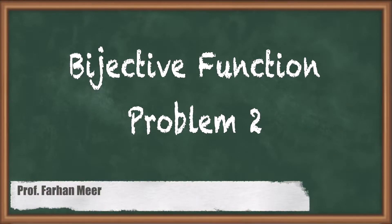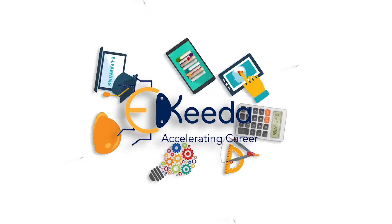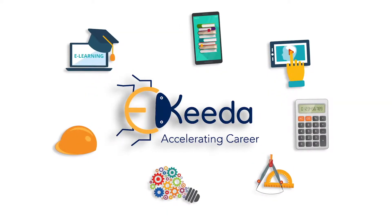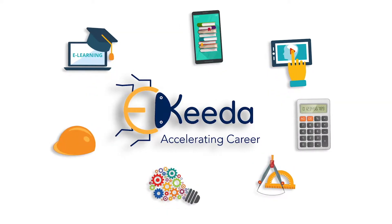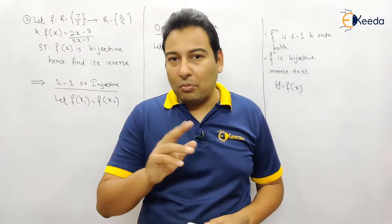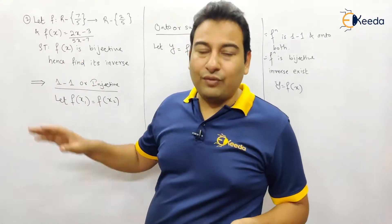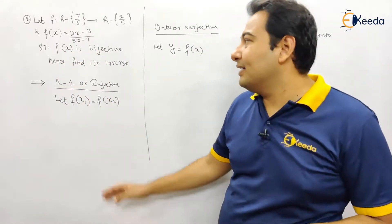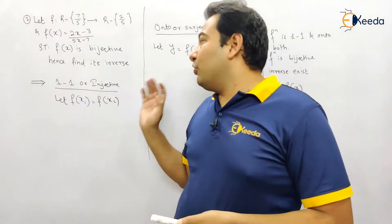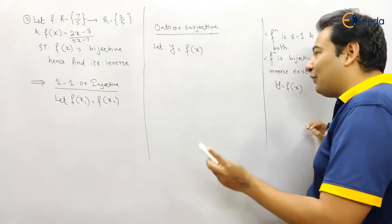Hello friends, in this video we will be discussing problem number two on types of functions. Let us start with the next problem — problem number two on types of functions. We need to prove that the function is bijective and we need to find its inverse. The procedure is exactly the same; we just need to fill in the steps.